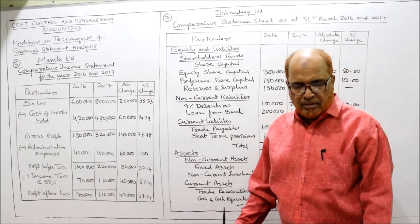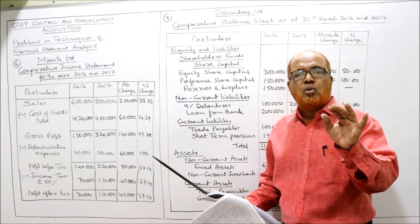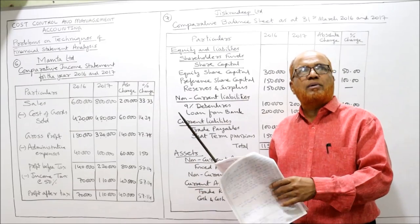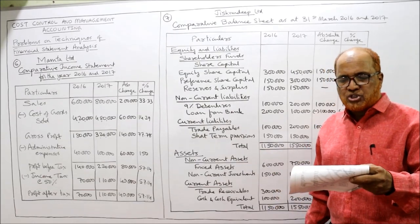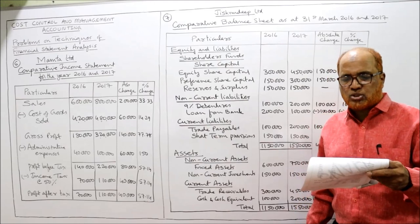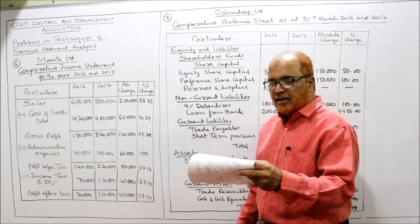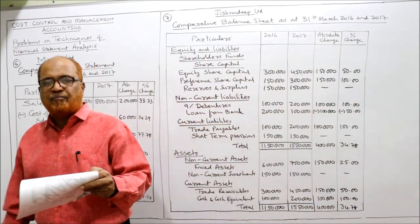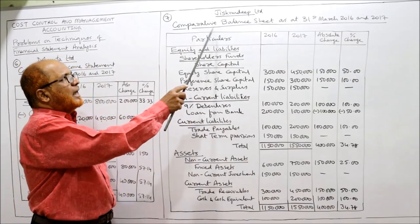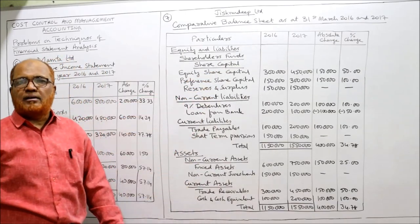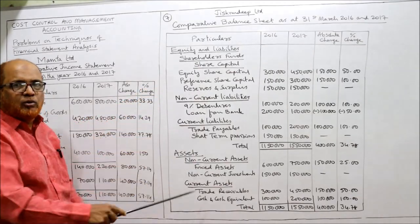Now 7th problem — it is asking you to make the comparative balance sheet. So far we have done problems only on comparative income statement. This is the first problem where we are finding out the comparative balance sheet. From the following balance sheet of Jishnu Deep Limited as at 31st March 2017 and 2016 — last year 2016 and current year 2017 — prepare comparative balance sheet. First of all, you copy down the format of the balance sheet. You can see balance sheet as at 31st March 2016 and 2017, so whatever format is given, the same particulars I have copied — no change at all.